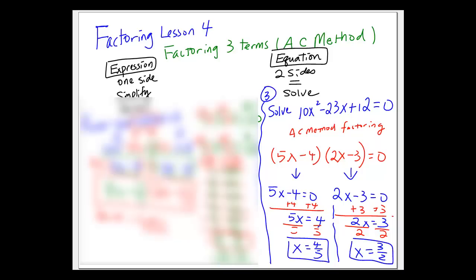For solving an equation with three terms — a trinomial starting with a squared term, which is a quadratic — you factor using the AC method, set each factor equal to 0, and then solve for x. That's the difference between solving and just factoring.